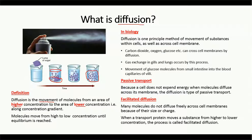Here you can see that at this point the sugar molecules are present at higher concentration, while at this point the molecules are present at lower concentration. So by the process of diffusion, these sugar molecules started to travel from higher concentration to the lower concentration.